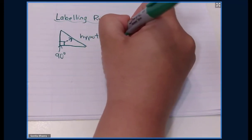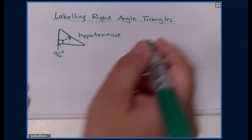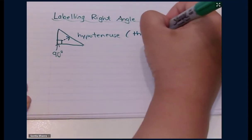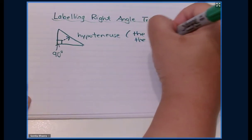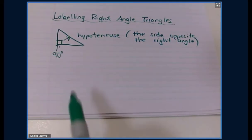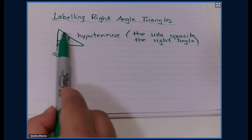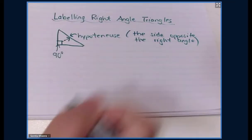Anytime you are looking for the hypotenuse, the best way to remember it is: it is the side opposite the right angle. I always suggest finding it that way — go to your right angle, go opposite it, and that side is the hypotenuse. So this one here is the hypotenuse.